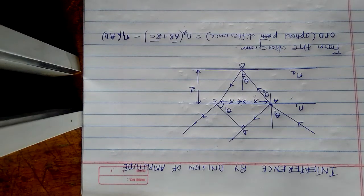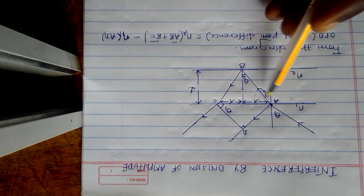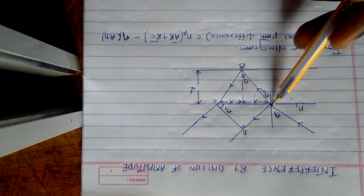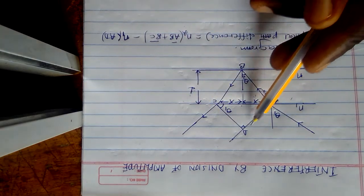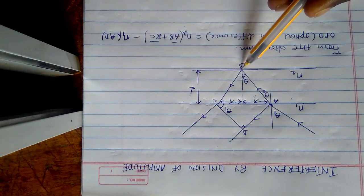Hi everyone watching my YouTube channel. In this lecture we are going to look at interference by division of amplitude. We have this geometry here — we have an incident ray, and it is reflected here and transmitted onto the other surface, and also reflected again.